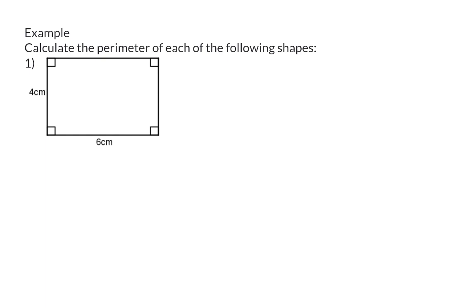Calculate the perimeter of each of the following shapes. We now know that to get the perimeter of a polygon we need to get the sum of all the side lengths.